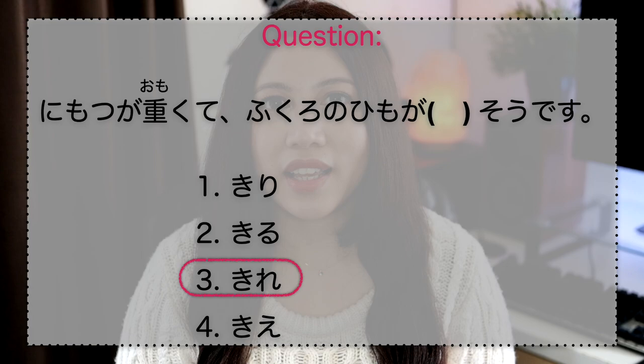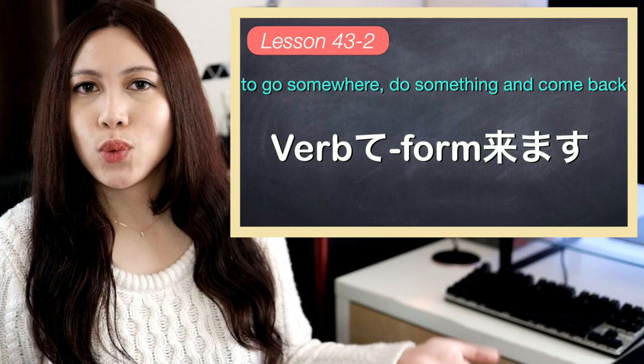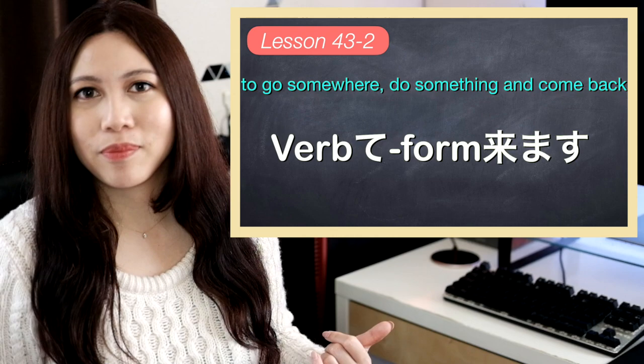The next pattern is a verb in te-form followed by kimasu — verb te kimasu. This pattern means to go somewhere, do something, and then come back. That's why it's verb te and then kimasu, to come. Verb te kimasu: go, do something, and then come back.